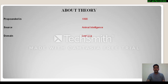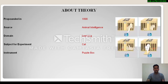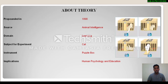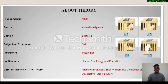This theory belongs to the domain of learning. In this theory, Thorndike used a cat for the purpose of experiment and the instrument he chose is called a puzzle box, which is simply a cage. This theory has its implications in the field of human psychology and education. It is also identified as trial and error theory, bond theory, Thorndike connectionism, stimulus response theory, and associative learning theory.